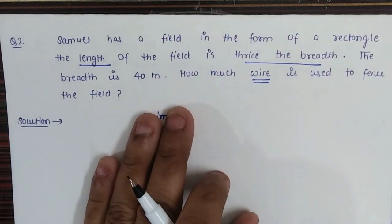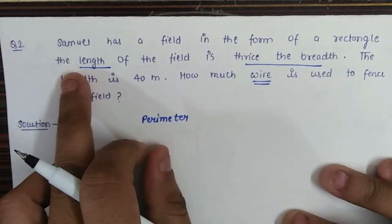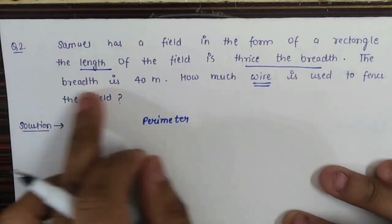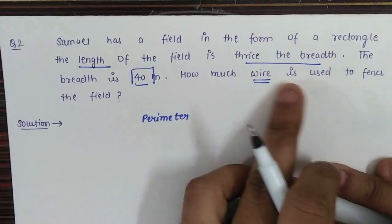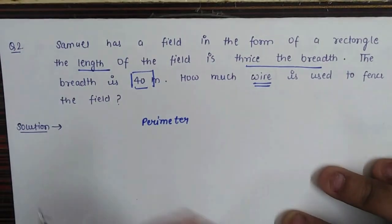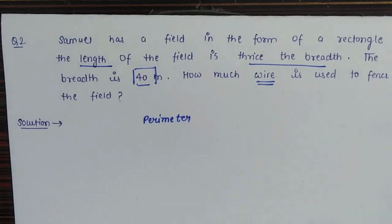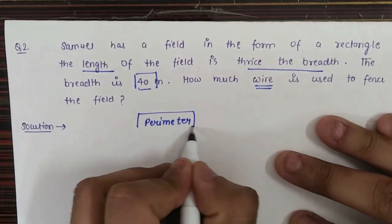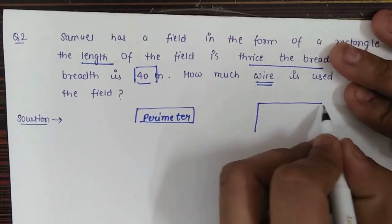Let's discuss question number two. Samuel has a field in the form of a rectangle. The length of the field is three times the width, and the width is given as 40 meters. It is asked how much wire is used to fence the field. Whenever a question asks how much wire is needed for fencing, we are supposed to calculate the perimeter of that figure.